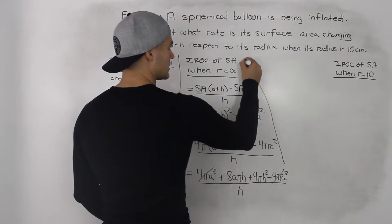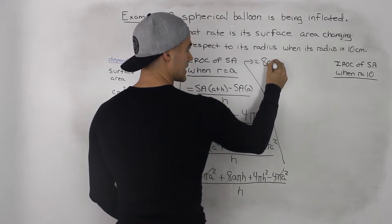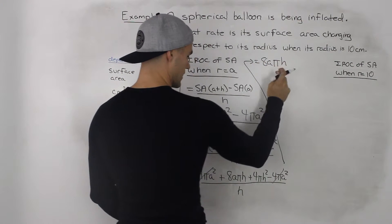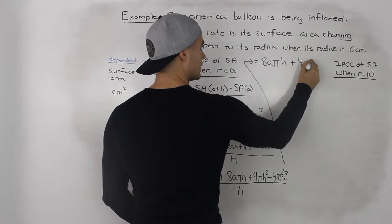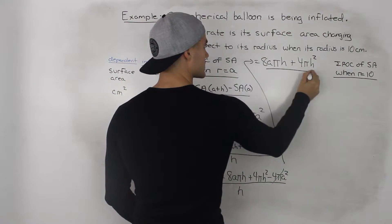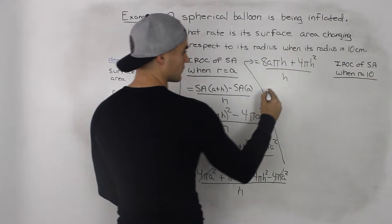So continuing this up here we would end up with 8aπh in the numerator plus 4πh². And this is all over h. We want to cancel out the h in the denominator. So we would factor out the h.